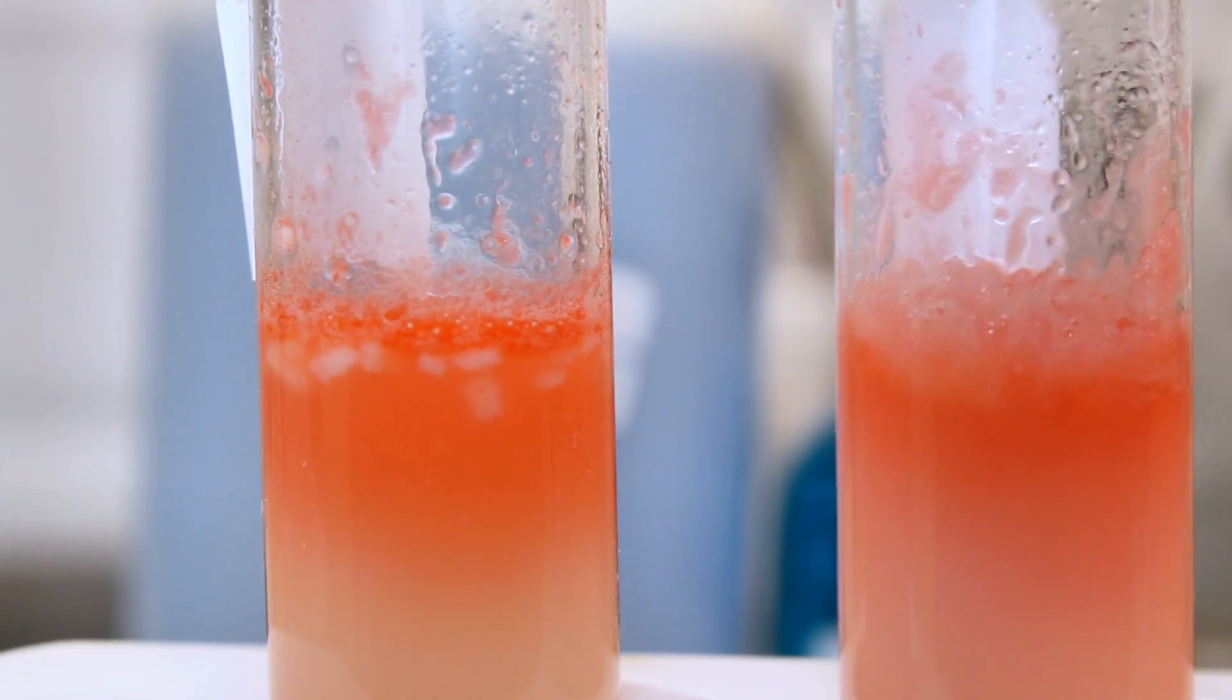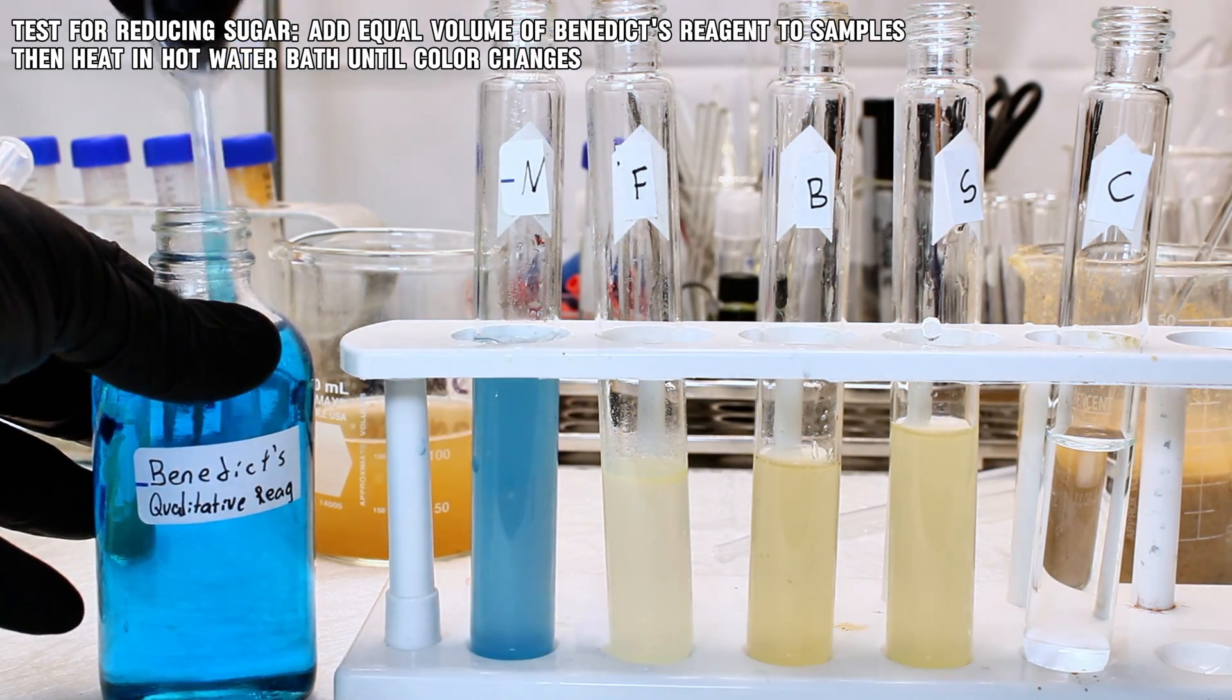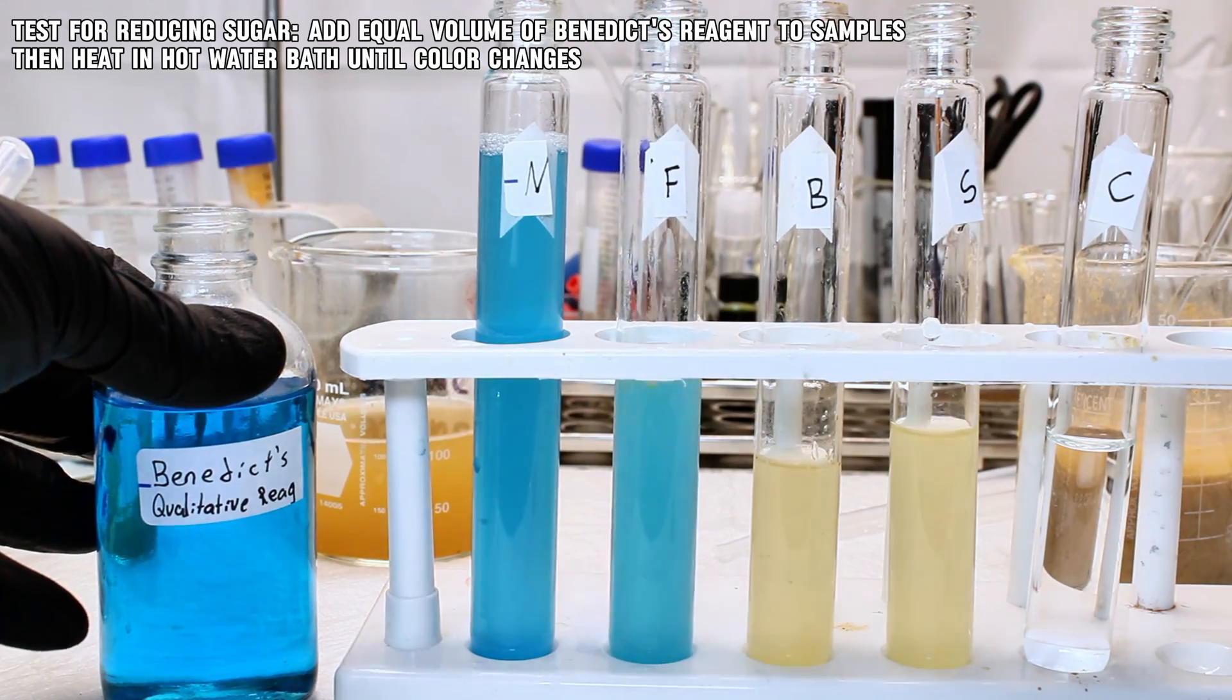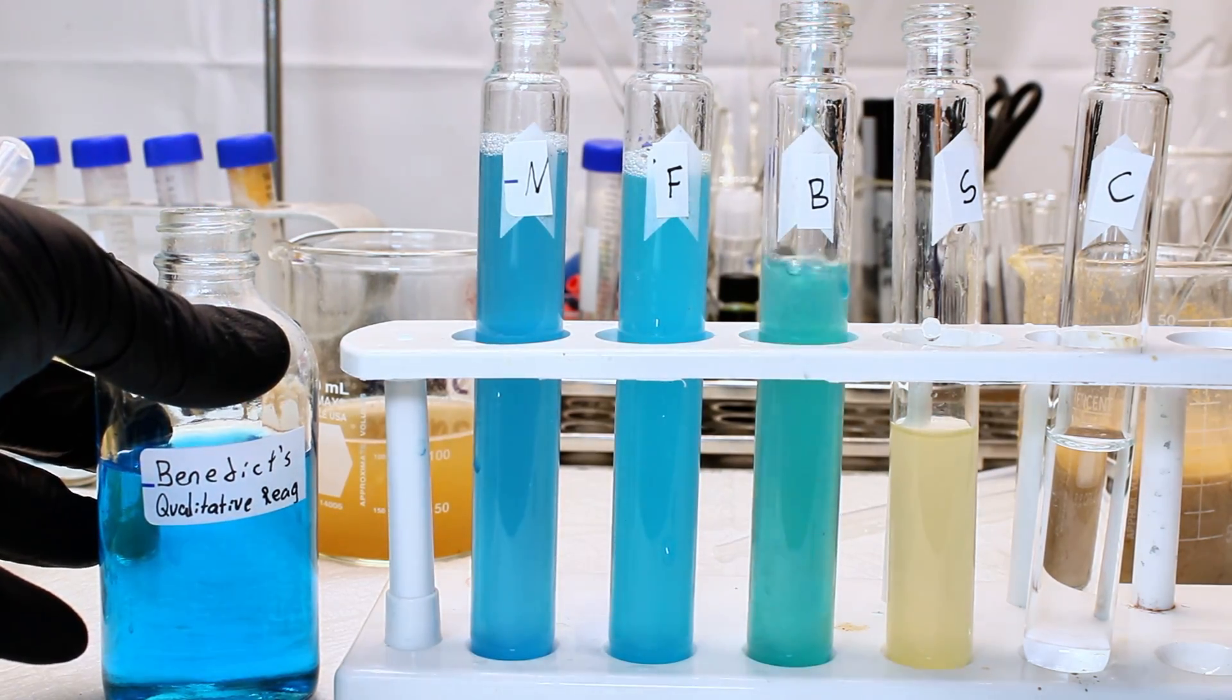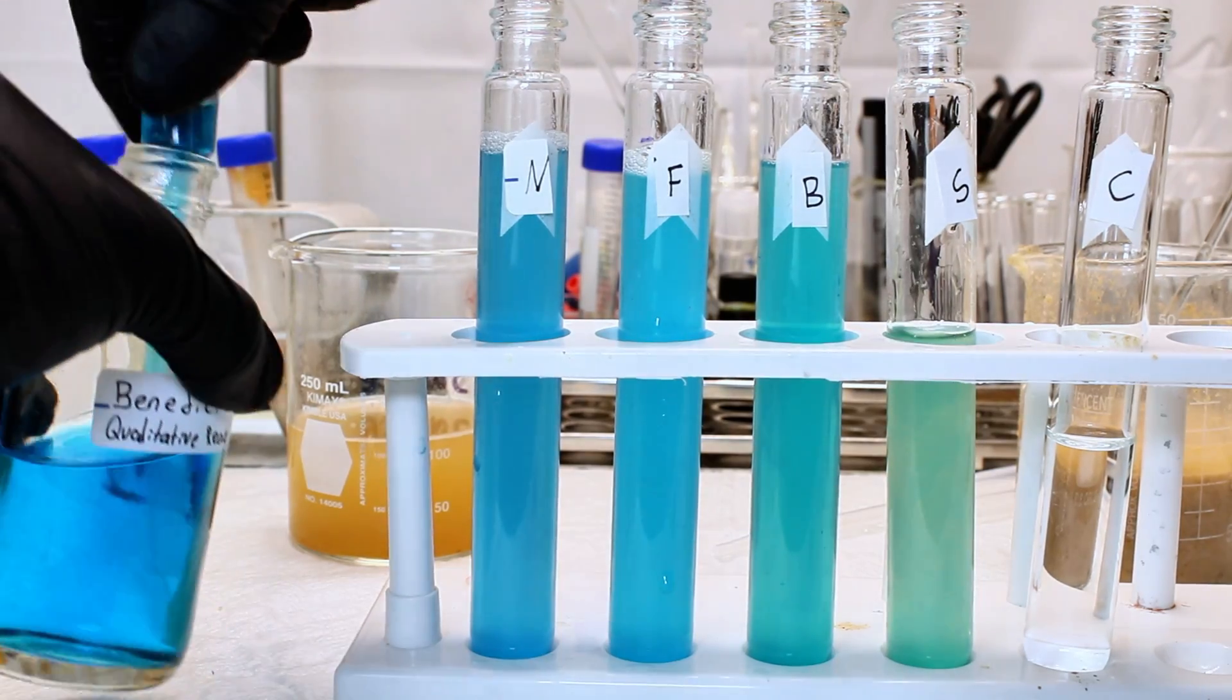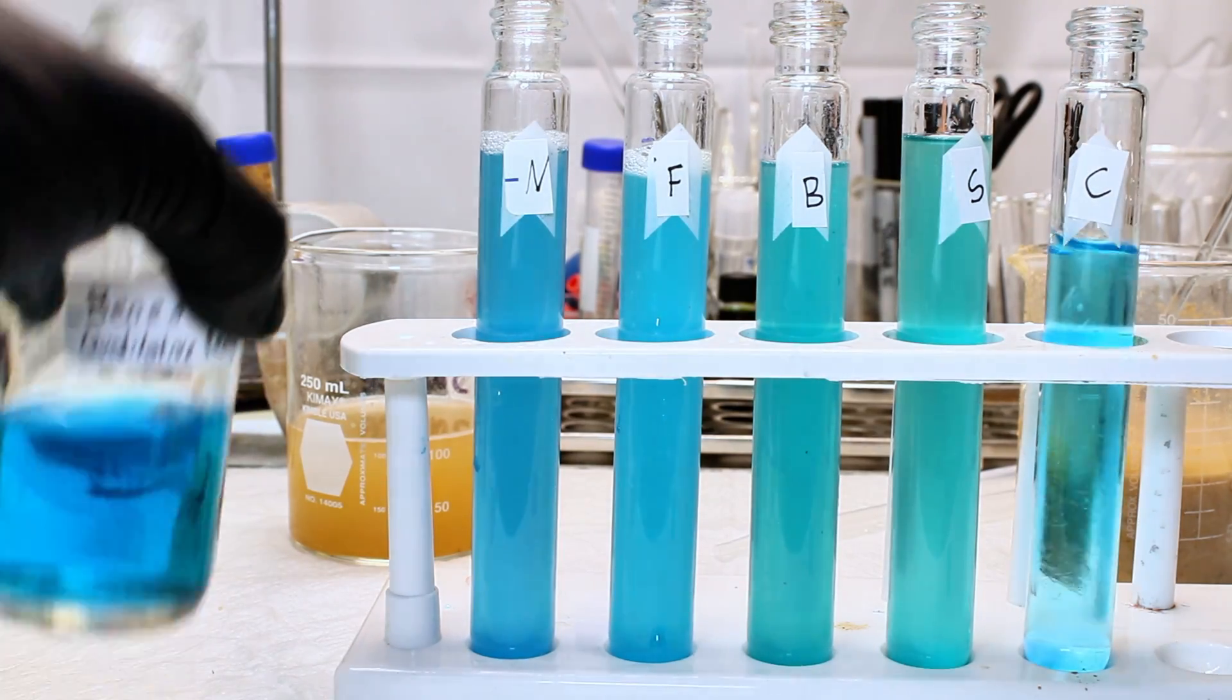Now moving on to my final test, it was time to test for sugar. And this is done using Benedict's reagent and works much in the same way as the Biuret reagent, except that the samples here have to be heated to get a result. To that end, I added Benedict's reagent to all my samples and then put them in a beaker of water that I heated on my hot plate until eventually I got a color change.